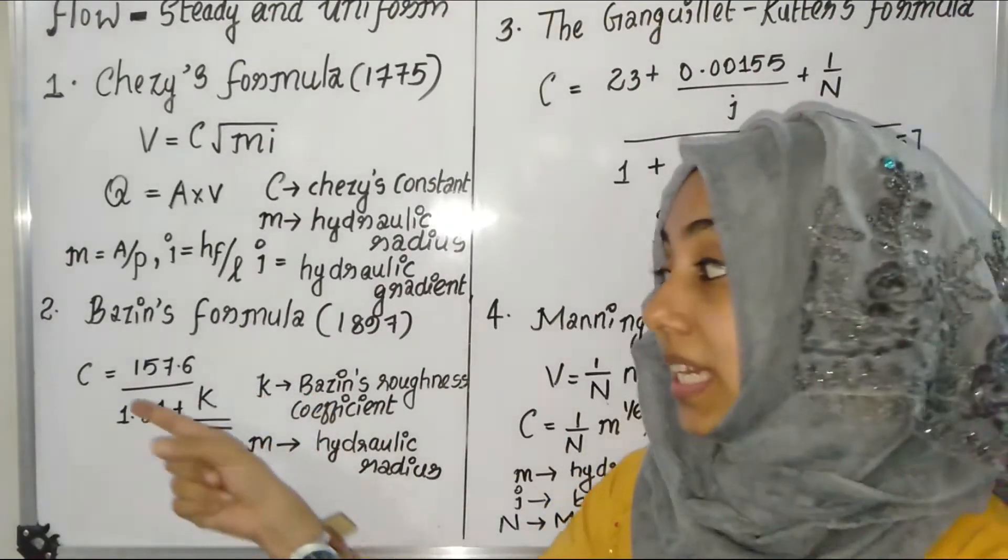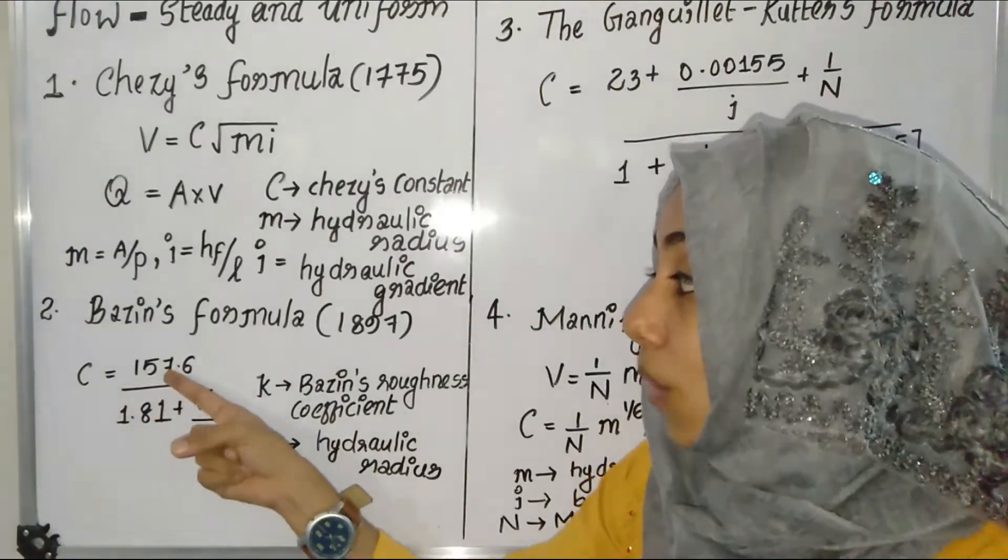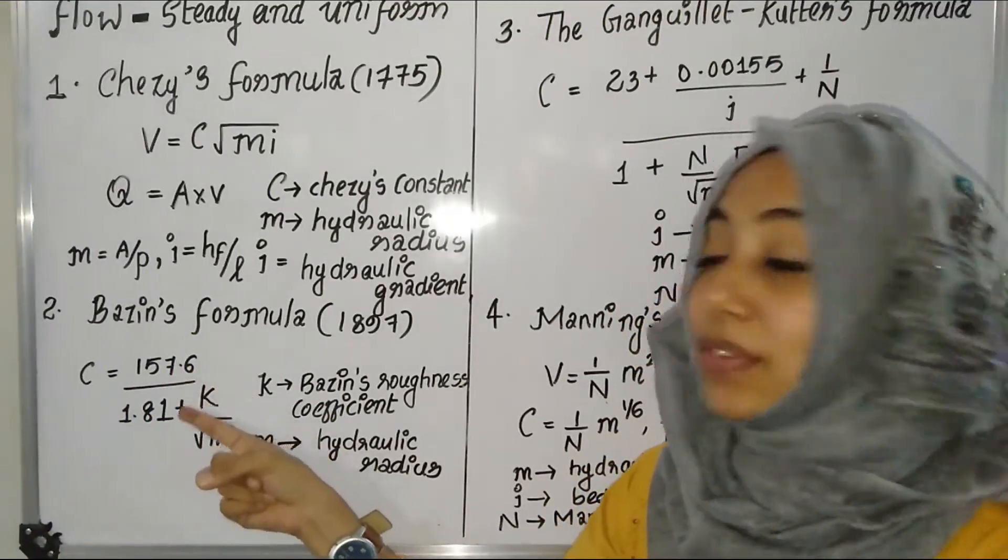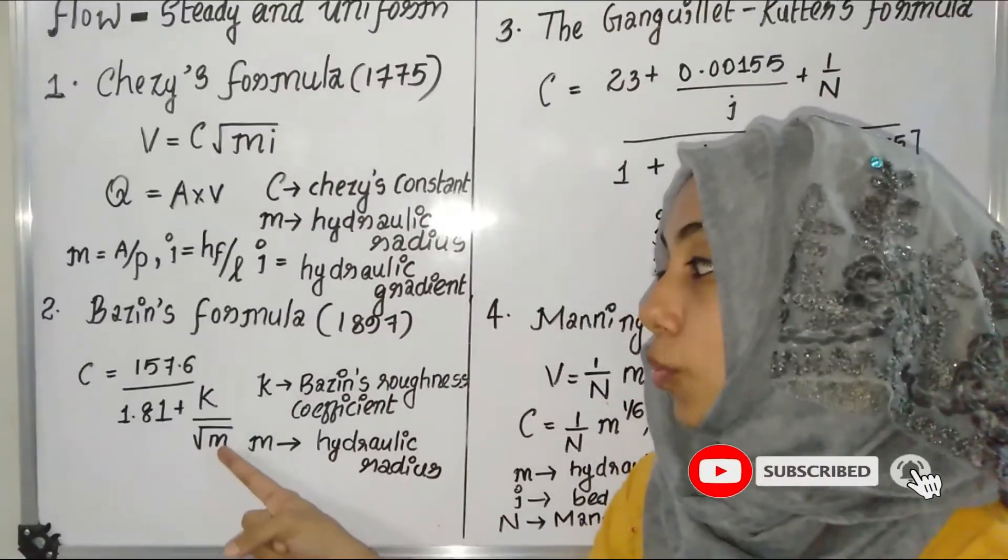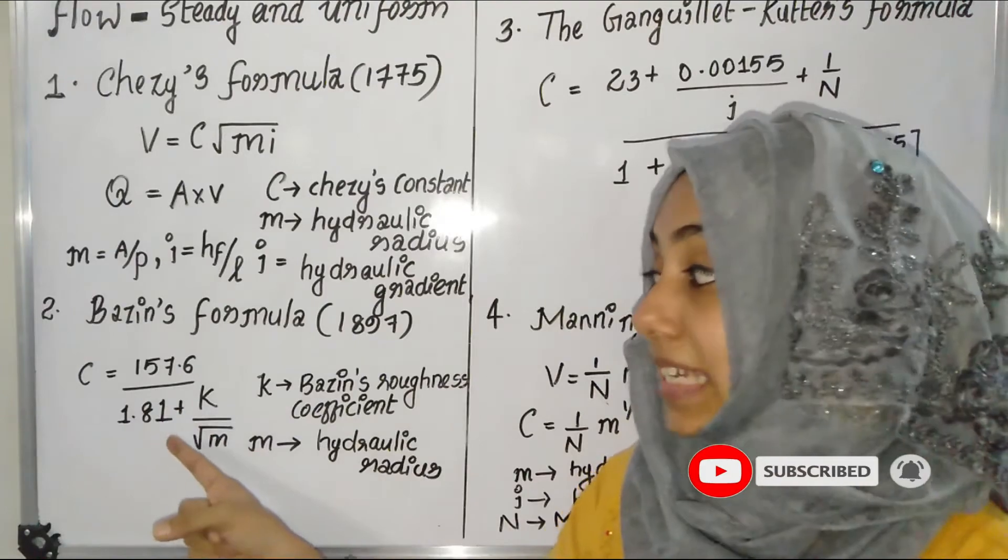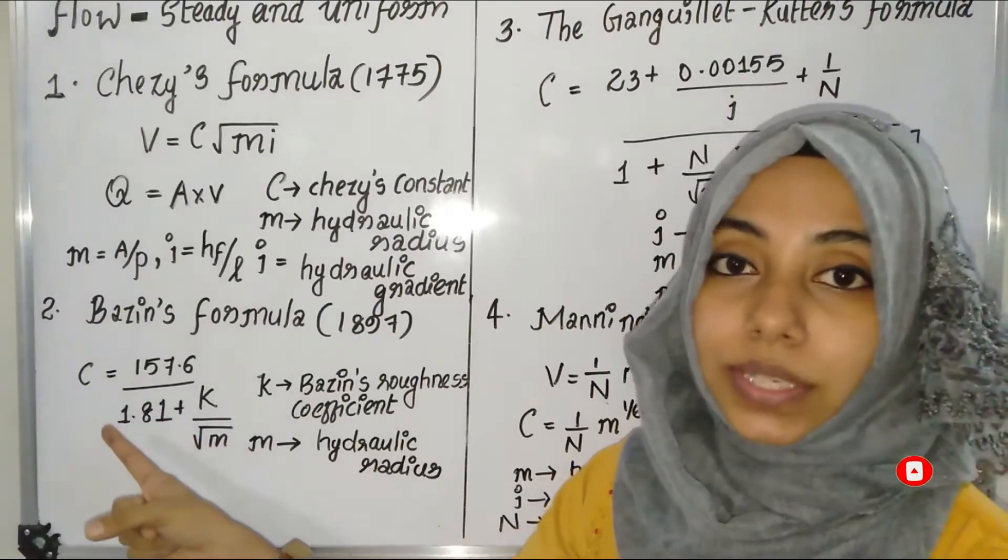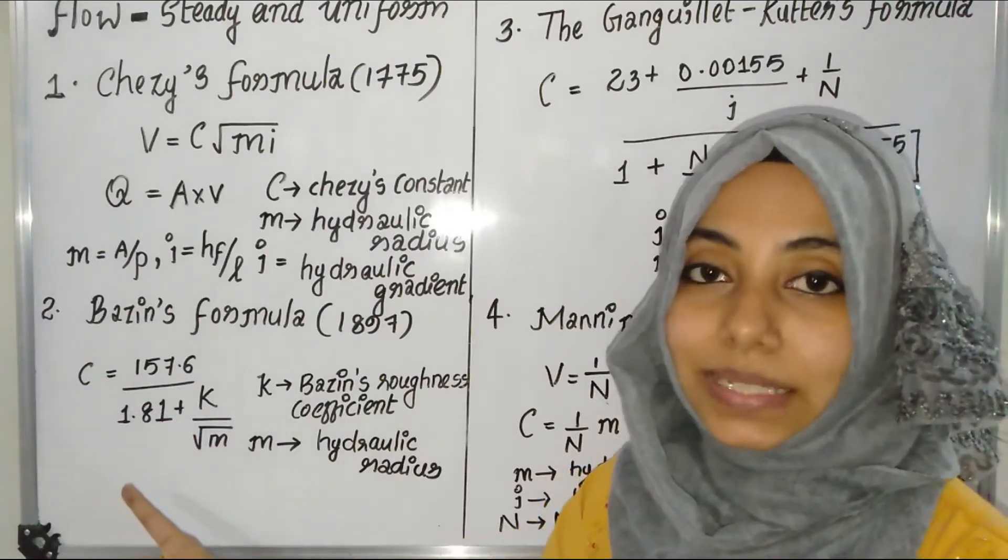Bazin's formula relates to Chezy's constant. Chezy's formula, C is equal to 157.6 divided by 1.81 plus K divided by root M. This is Bazin's formula.